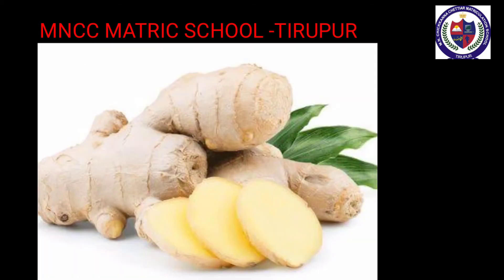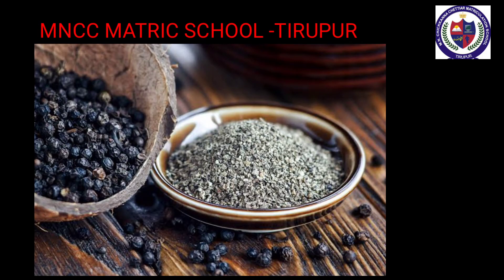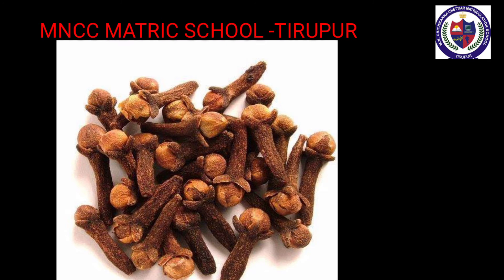Next, Ginger — it helps to improve digestion and also reduces nausea. Next, Turmeric — it is a common anti-infectant and it helps to heal wounds. Next, Black Pepper — it is a great remedy for cold and cough. Next, Cloves — they help relieve toothache.